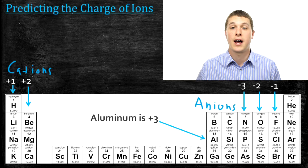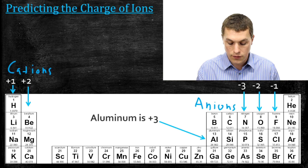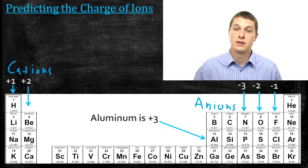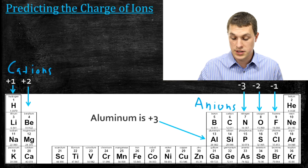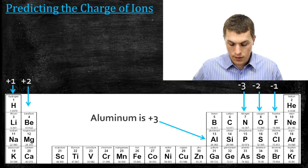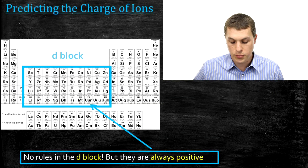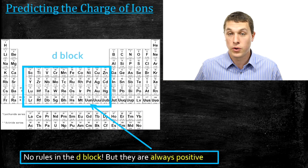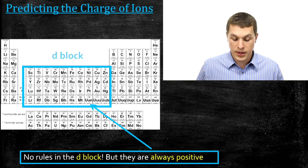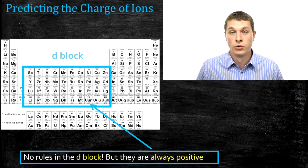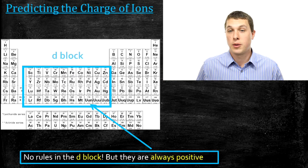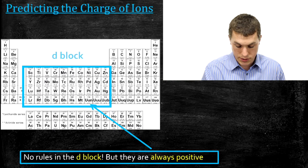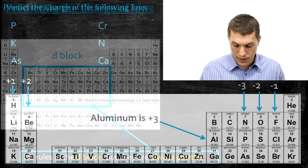So positive ions are cations and negative ions are anions. Now we have everything we need to predict the charge that an element will take on when it becomes an ion, based on its position on the periodic table. One important note before the practice problems: the D block — that big block in the center of the periodic table — doesn't have good rules for predicting the charge. Those elements always form positive ions, but you don't know how positive. So we can only reliably predict charges for elements on the far left and the far right of the periodic table.